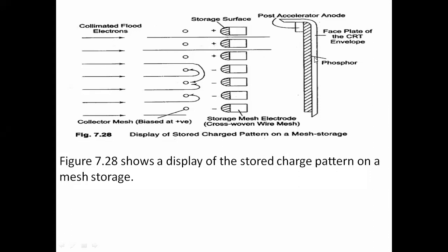The electrons that pass through the positive charge carriers hit the phosphor material and produce the display. How long the flood gun is on determines how long we can read the signal — that much time the signal will be present on the screen. This is how we achieve storage of the applied signal.